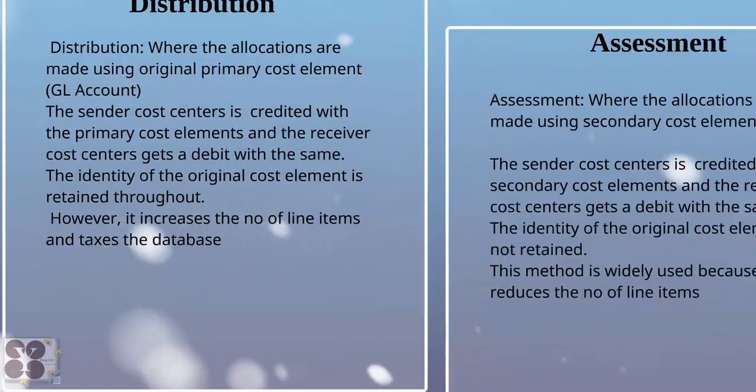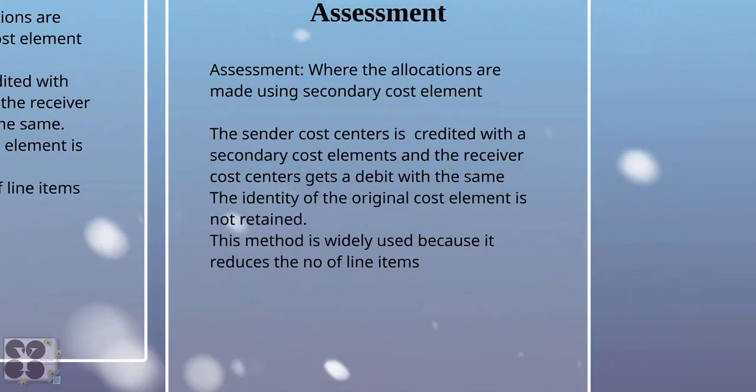There is another method: assessment. In assessment, allocations are made using a secondary cost element. Secondary cost elements have no relation whatsoever to financial accounting — they only have validity in the controlling area, not in financial accounting. Whatever we do with the secondary cost element stays within the controlling area. The sender cost center is credited with the secondary cost element and the receiver cost center gets a debit with the same. The identity of the original cost element is not retained. This method is widely used because it reduces the number of line items.